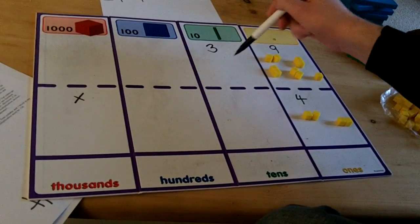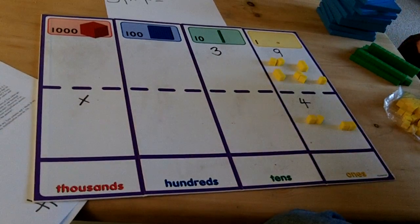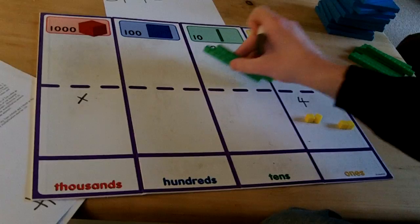In the tens column I have just got a 3 here. This represents 30 so I must use my rows of 10 cubes and put 3 of them on top of the 30.